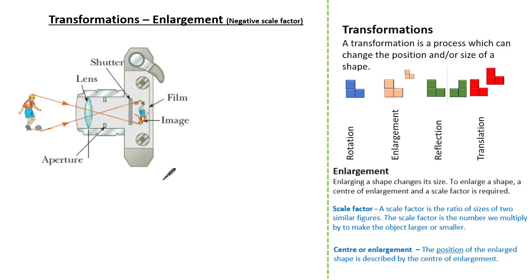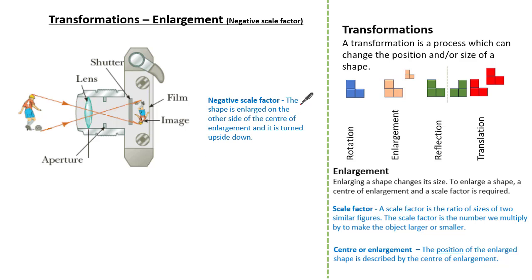The concept of negative enlargement can be illustrated with a good old fashioned camera. Here the image is captured through a lens and it's inverted. The top is shown on the bottom of the film and the bottom is shown on the top of the film — this film is called a negative, because everything is the opposite on the other side of the lens. It's the same as enlarging by a negative scale factor: the shape is enlarged on the other side of the centre of enlargement and turned upside down.